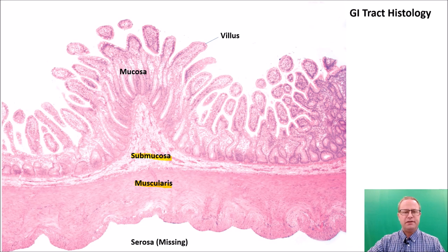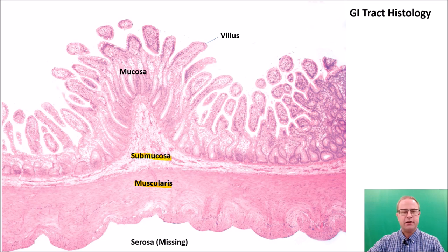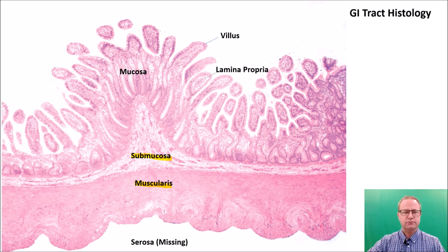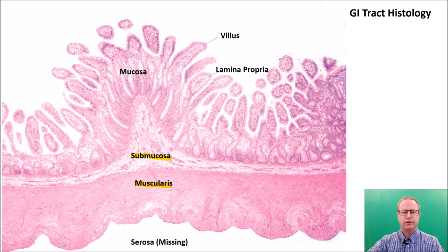Here you can see something called the intestinal villus — a finger-like projection that helps to increase the surface area of the small intestine and other GI organs, aiding in absorption as well as enzyme secretion. Underneath the villus is a structure called the lamina propria, which is areolar connective tissue found within the mucosal layer.